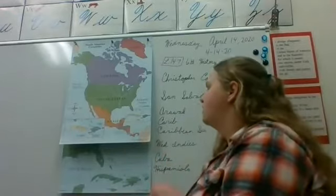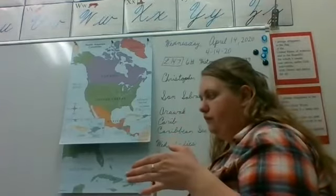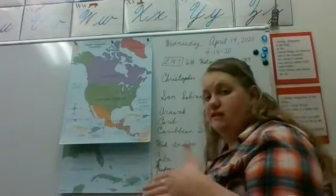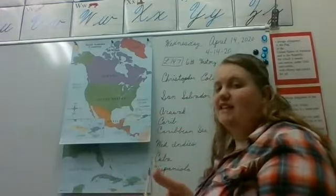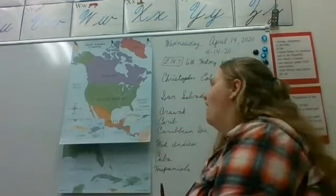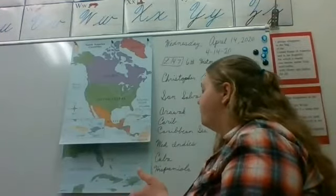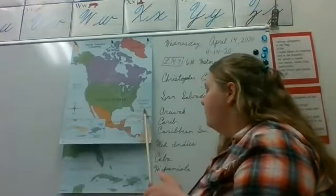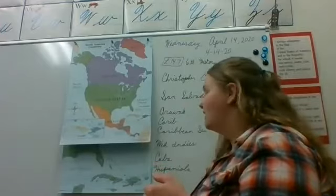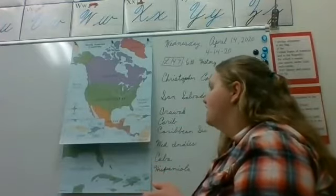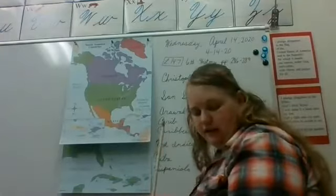Now we distinguish them because originally those were just called the Indies islands. But now we have to have the West Indies and the East Indies. Christopher Columbus lands on San Salvador — that island there.